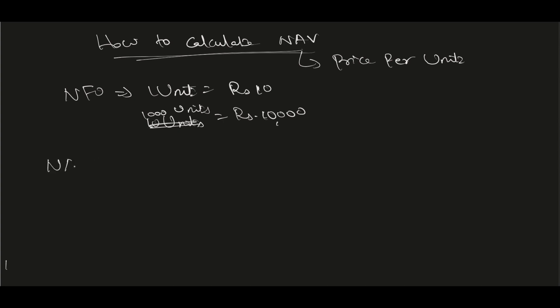So how do they calculate NAV after that? The price per unit. The formula to calculate NAV is: assets minus outside liabilities divided by the number of units outstanding.